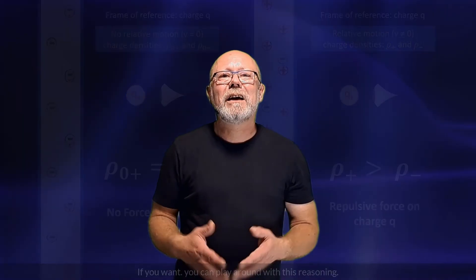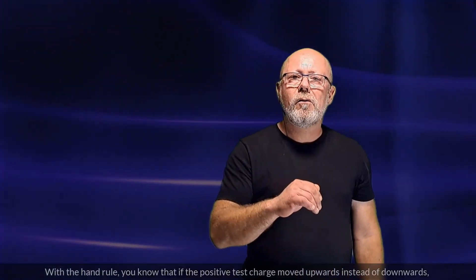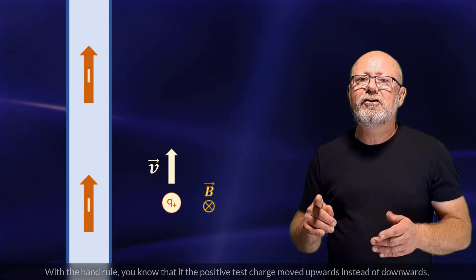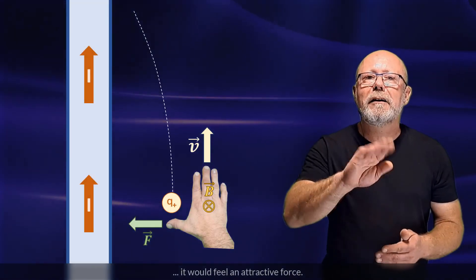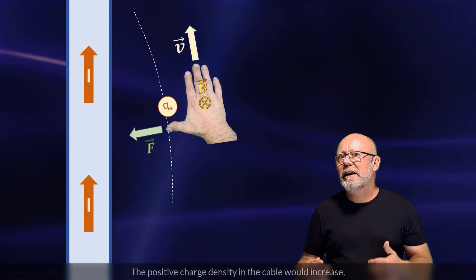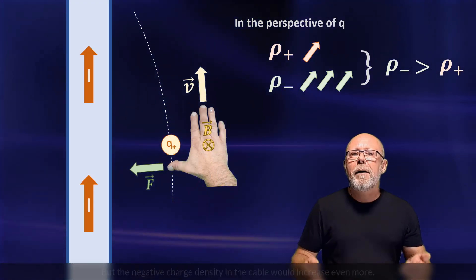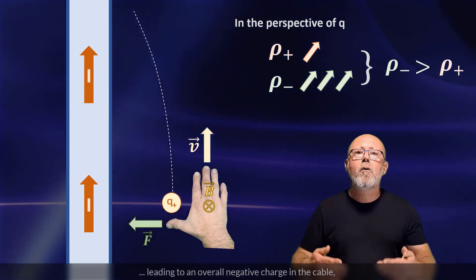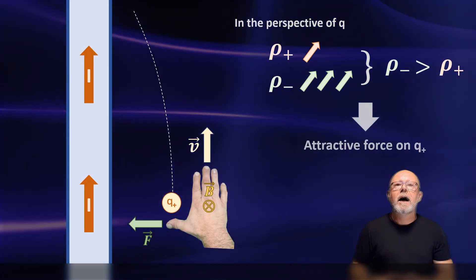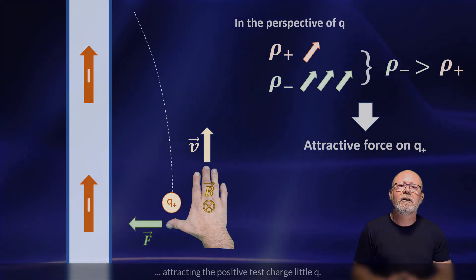If you want, you can play around with this reasoning. With the hand rule, you know that if the positive test charge moved upwards instead of downwards, it would feel an attractive force. The positive charge density in the cable would increase, but the negative charge density in the cable would increase even more, leading to an overall negative charge in the cable attracting the positive test charge, little q.